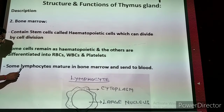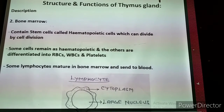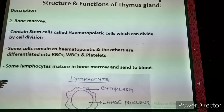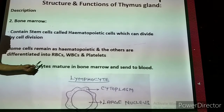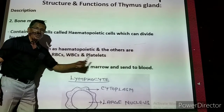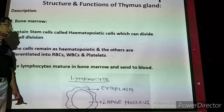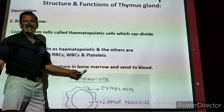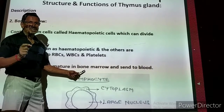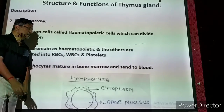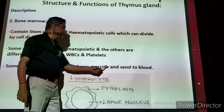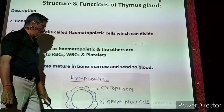Some lymphocytes — one type of white blood cell — mature in the bone marrow. They are called B cells, also called B lymphocytes. B stands for bone marrow, meaning they are matured in the bone marrow, and are then sent to the blood.